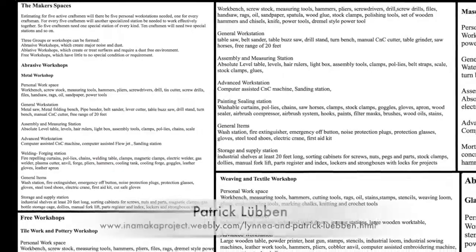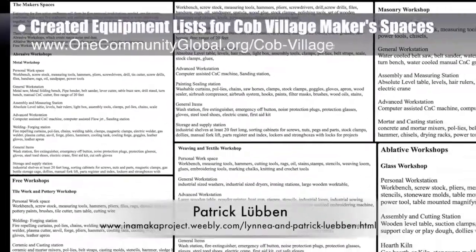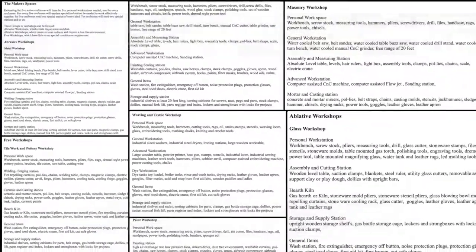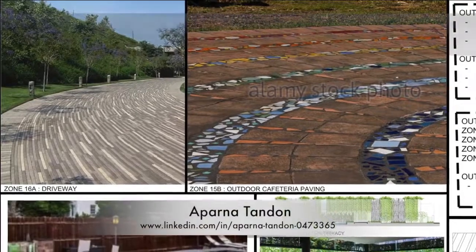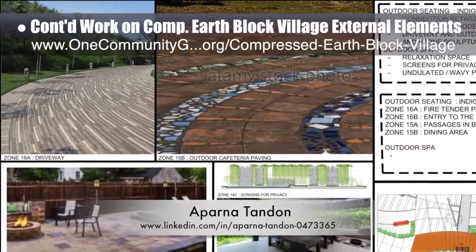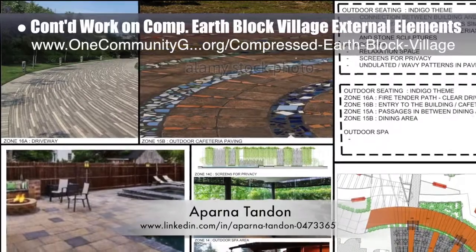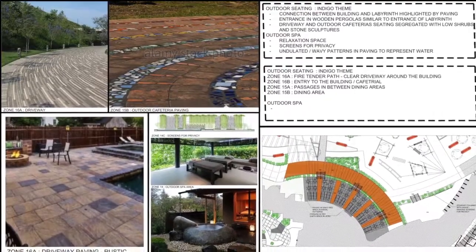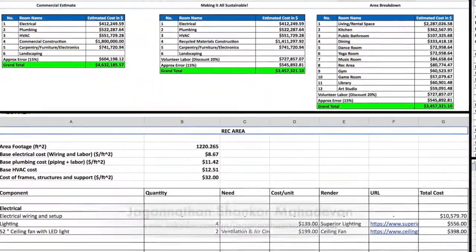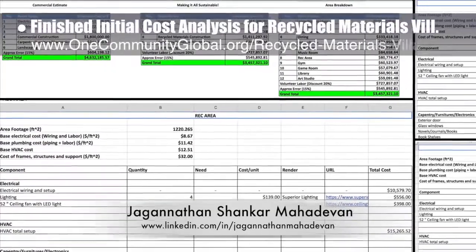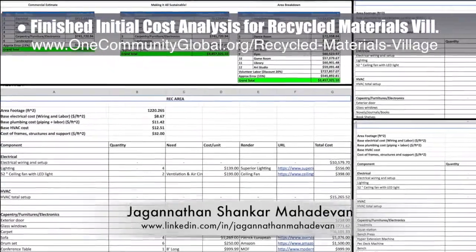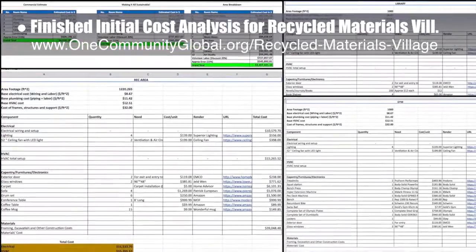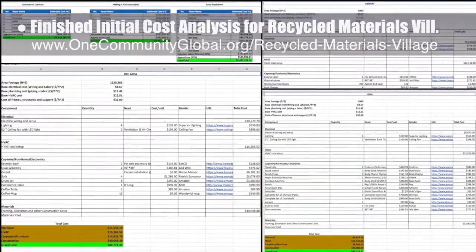Also helping with the Cob Village designs, Patrick Lubin, founder of the Gables Green Homes Project, created equipment lists for the four makers' spaces for this village. Architect Aparna Tandon continued her work on the compressed earthblock village external elements — her 44th week of work created an initial presentation for zones 14, 15, and 16. Mechanical engineer Jagannathan Shankar Mahadovan completed his 14th week volunteering, with this week's focus being the initial cost analysis for the Recycled Materials Village Pod 6.